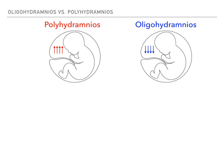Breaking down the words: polyhydramnios - 'poly' means too much, 'hydra' means water, 'amnios' means amnio - so too much amniotic fluid. Oligohydramnios - 'oligo' means few or little, 'hydra' means water, 'amnios' describes the type of liquid - so too little amniotic water, which is the same thing as too little amniotic fluid.